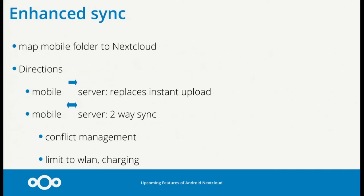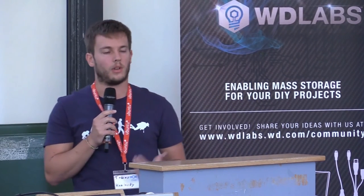Coming next is enhanced sync functionality — mapping any folder on the mobile phone to a Nextcloud folder, for example to back up your WhatsApp image folder. Initially we want to do it in one direction only, from mobile to server, to replace instant upload and solve the Android 7 problem. In later versions we want to implement full two-way sync with conflict management and restrictions to VLAN or charging only.